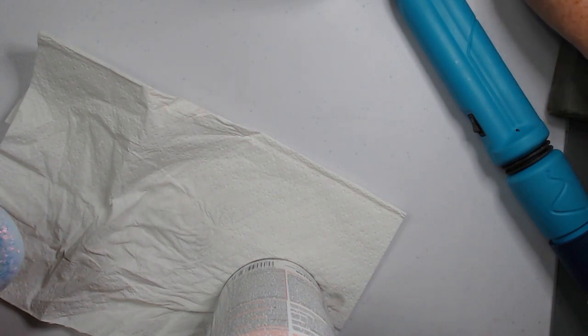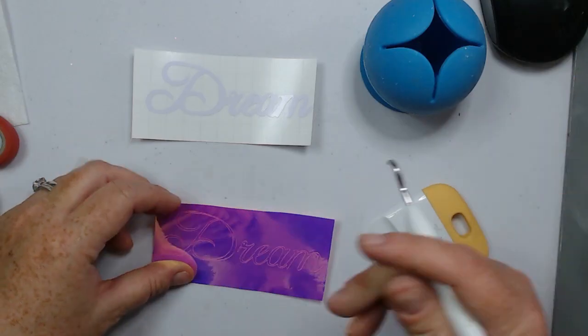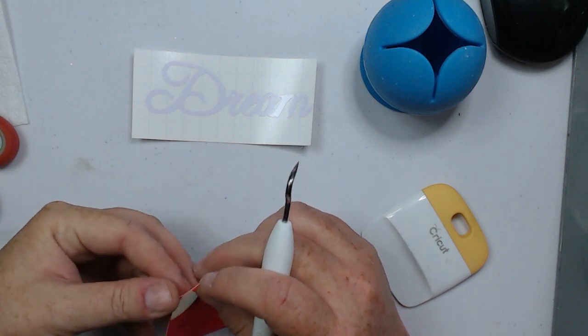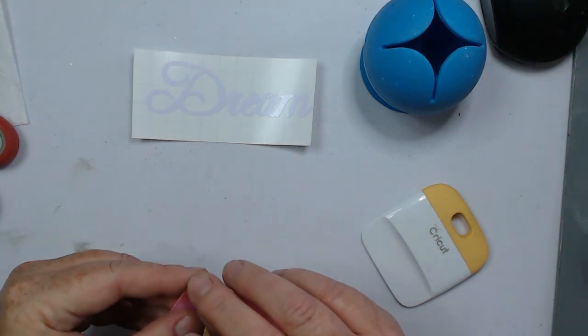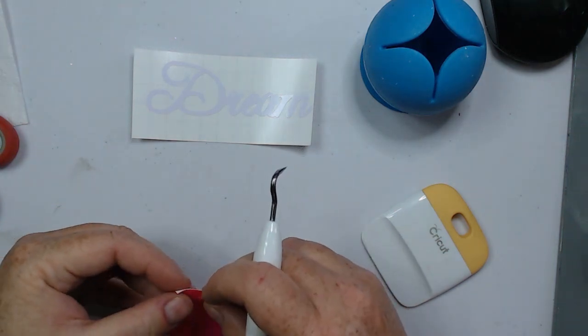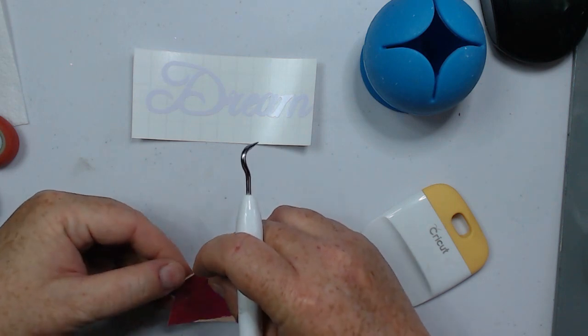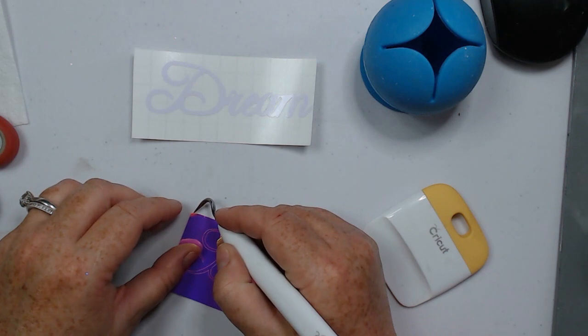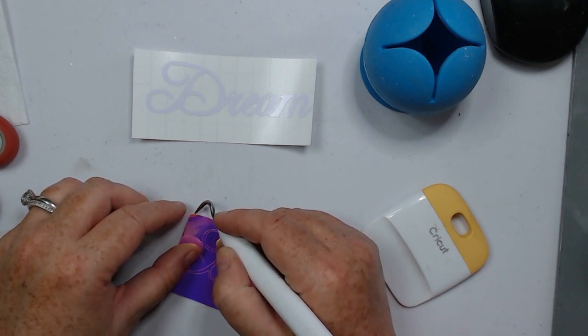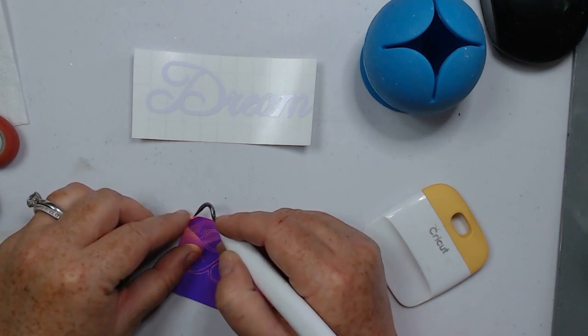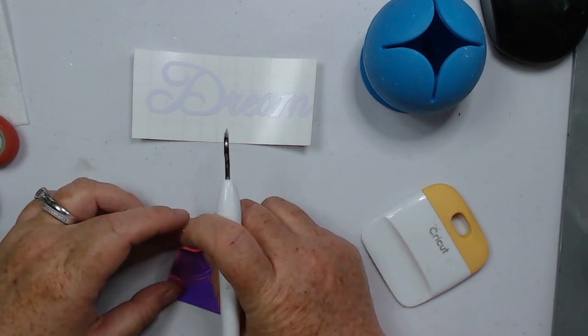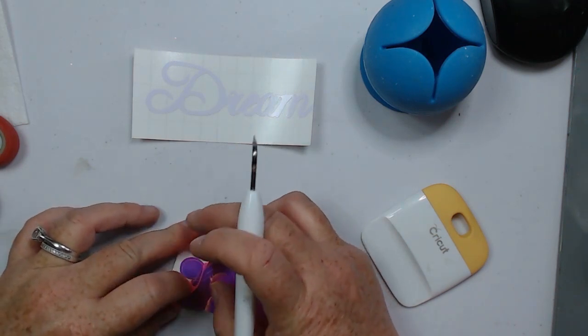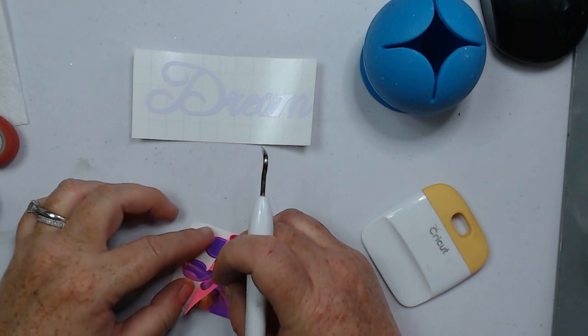And once I have my bottom all cleaned up on my rock, I do spray the top of it with this triple thick by Rustoleum. And now we're moving on to adding the text, which I use the word dream. And I cut this out on my Cricut. You can see the word dream on that white piece of vinyl. That's all just done in white and that's been offset from the text that I'm weeding out right now.